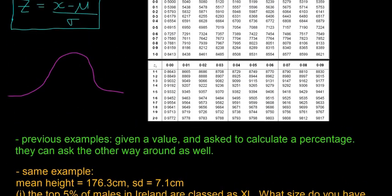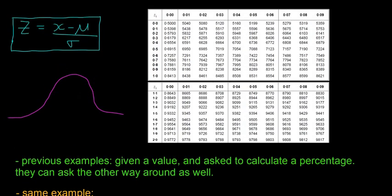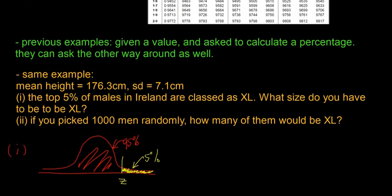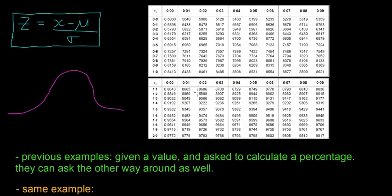So the way to do that is we go to the tables, and this time we're going to have to look through the tables bit by bit to find which value has exactly 5% above it. So if it has 5% above it, that means that this red bit here is going to be 95%. So we're looking for the value that gives 95%. So we're going to look through all of these rows until we find 95. And that's going to be somewhere between these two values here, 0.9495 and 0.9505. So I'm going to say 1.645.